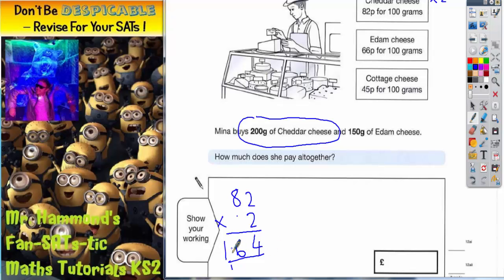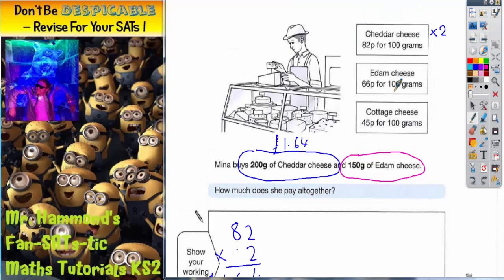164 pence, or in other words, one pound 64. So she's paying £1.64 for cheddar cheese. Now we'll get a different color for edam cheese, and this time I want 150 grams. Edam cheese - we know the price for 100 grams, but we want to add on an extra 50 grams.